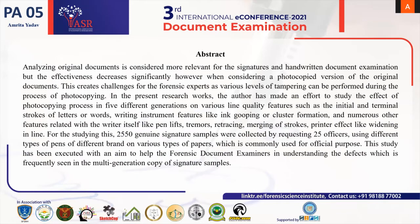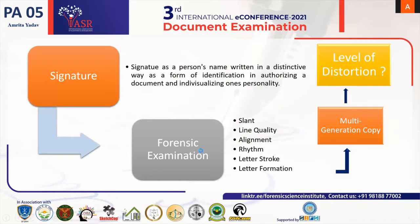Signature is a person's identity — a person's name written in a distinctive way as a form of identification, for authorizing a document, and for individualizing one's personality. While examining a signature, we look at factors like slant, various line quality features, alignment, rhythm, letter stroke, and letter formation. While doing multi-generation photocopying, there are levels of distortion that we will notice further.